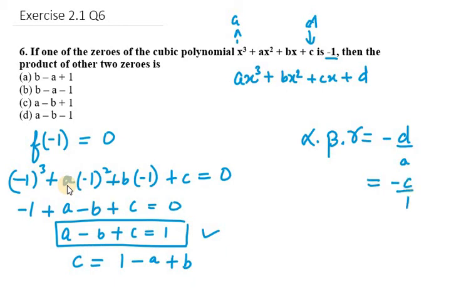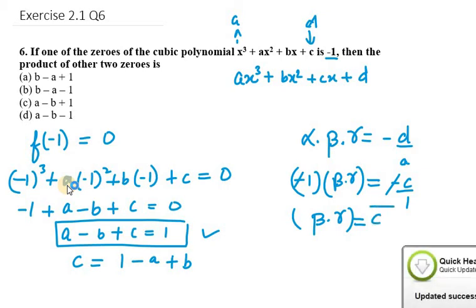Now we know the value for alpha. Alpha is -1 here and we don't know the value for βγ. So from this what we get is βγ equals -c, and the minus signs cancel out. So we get βγ = c.